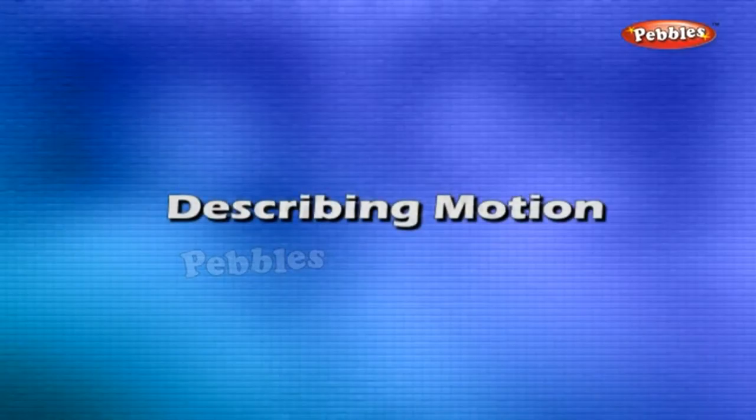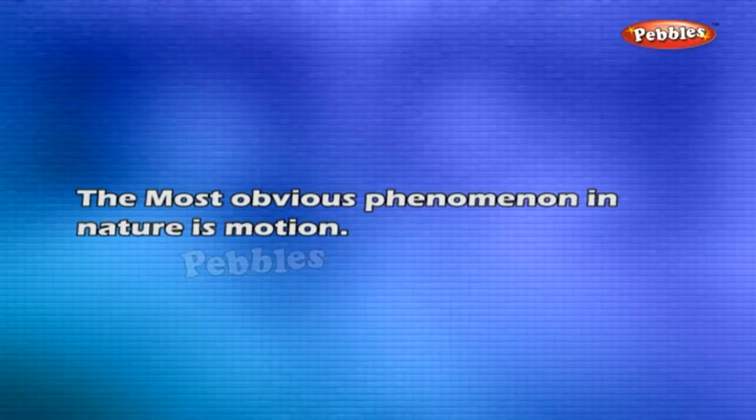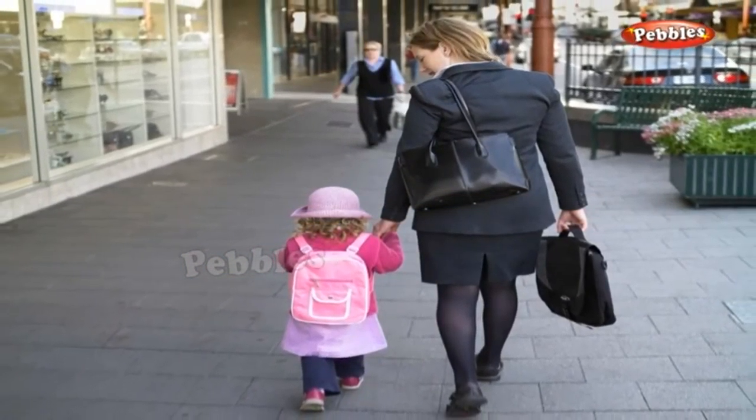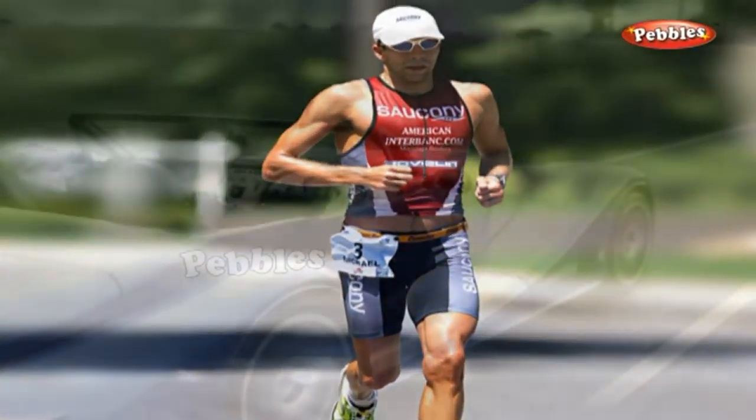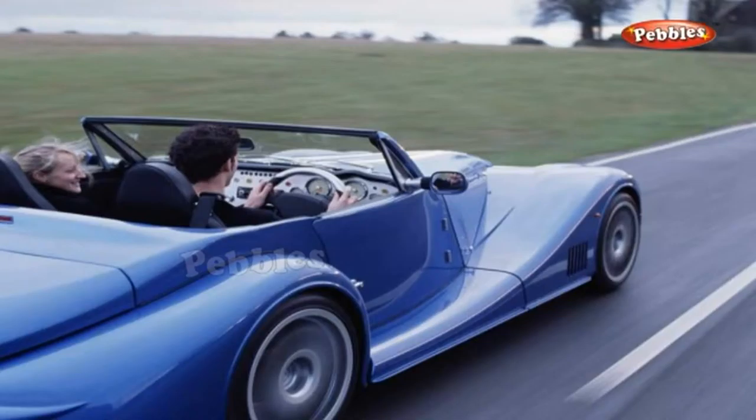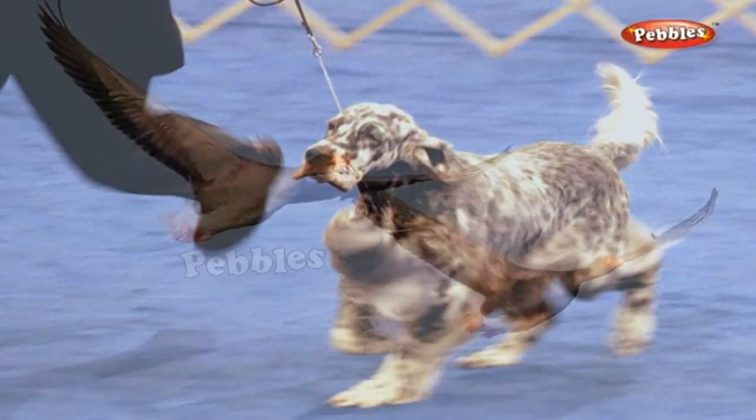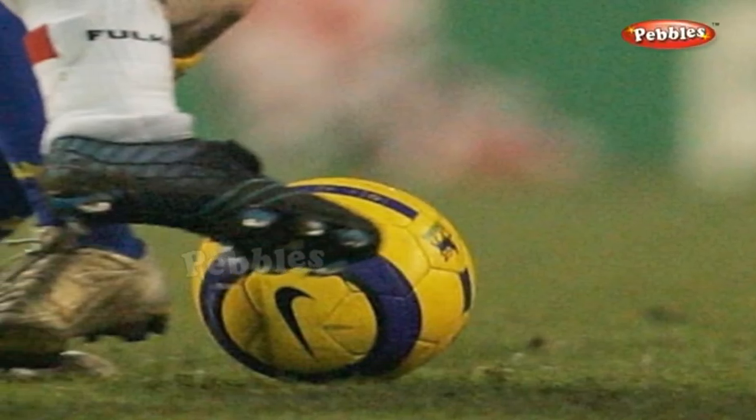Describing motion introduction. The most obvious phenomenon in nature is motion. A boy walking along a road, a man running a race, a boy driving a car, a speeding truck, moving dogs, a flying bird, a football rolling on the ground.